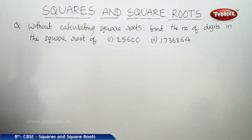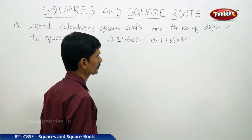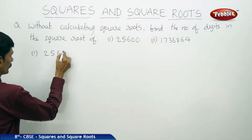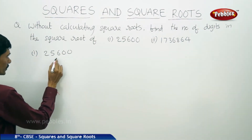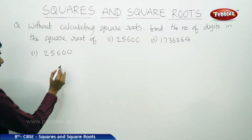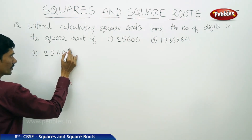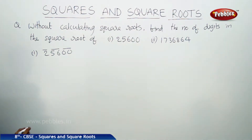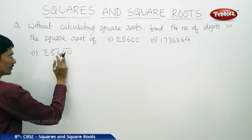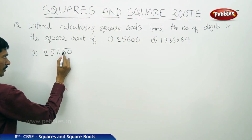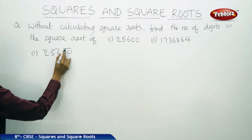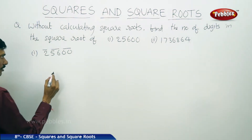Now let us solve a problem: without calculating square roots, find the number of digits in the square root of 25600 and 1736864. First we take 25600. How many bars will be placed over this number? From right side for every two digits: over 00 is one bar, over 56 is two bars, and 2 is left alone so another bar over 2. So there will be 3 bars over 25600, and therefore 3 digits in the square root.